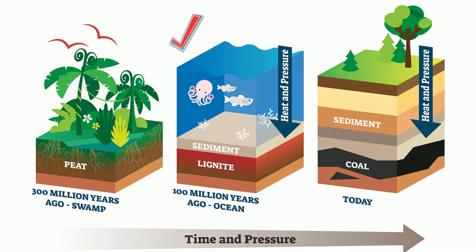lignite, and sediment get added to the original organic matter. Eventually all this sediment and organic matter accumulates and is transformed by pressure and heat into coal.